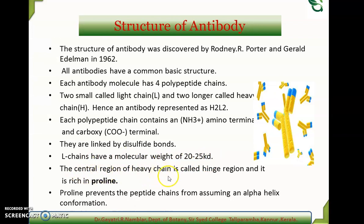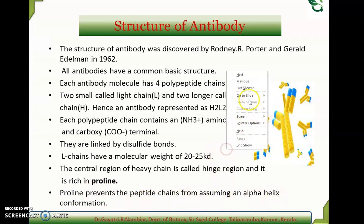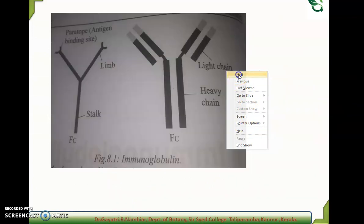The central region of the heavy chain is called the hinge region, and it is rich in proline. Proline prevents the peptide chain from assuming an alpha helix conformation. This is the basic structure of the antibody.